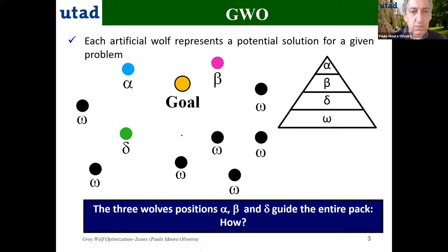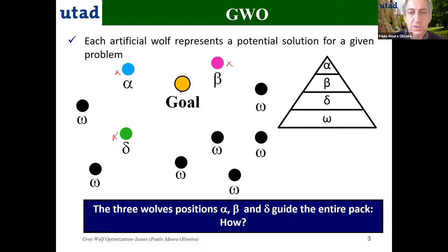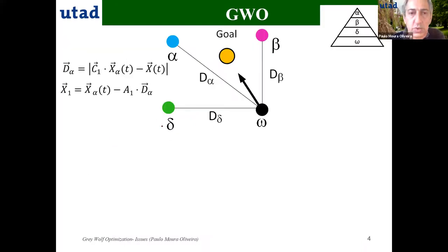Consider this figure where the alpha wolf is in one location, the beta wolf in another, and the delta in a third. All the other omegas are spread around. All the wolves, including alpha, beta, and delta, are going to be guided by the positions of these three wolves regarding the objective to be reached — the goal. We evaluate the distance between an omega and each of the alpha, beta, and delta wolves.